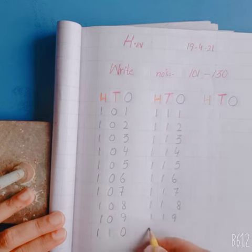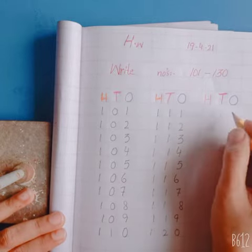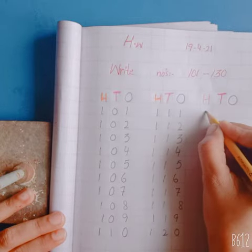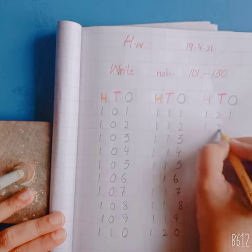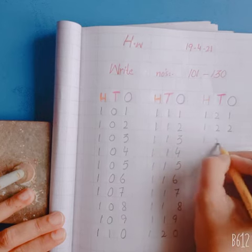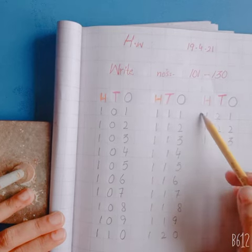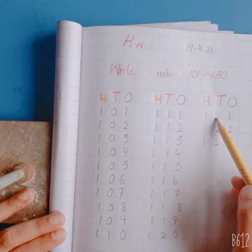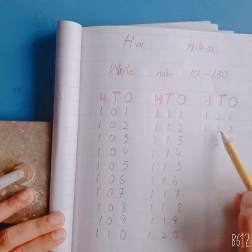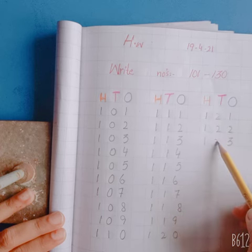And 120. Now 121, 122, 123. Students, 121 is one hundred, two tens, and one ones. 122, 123.